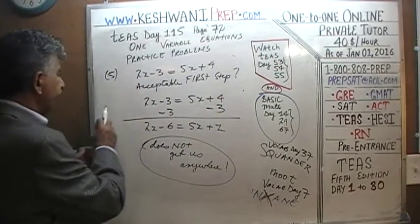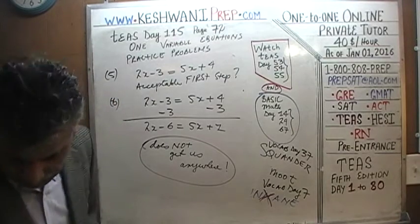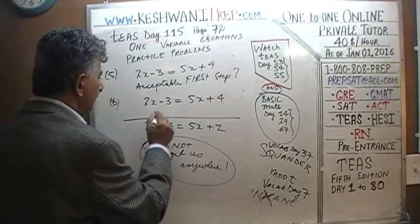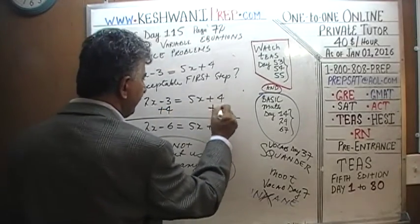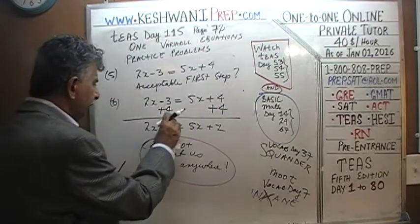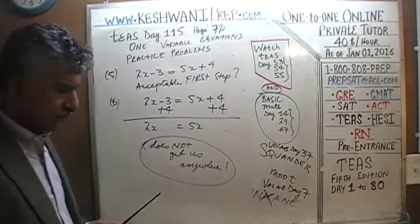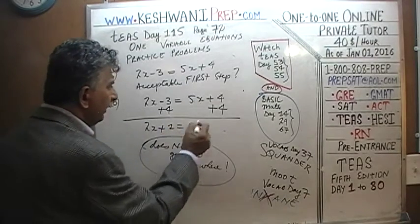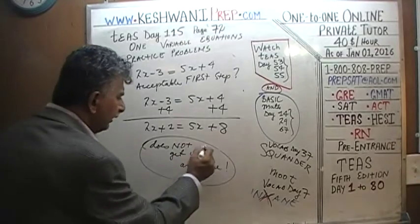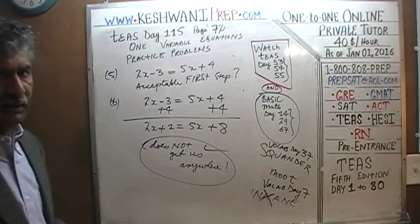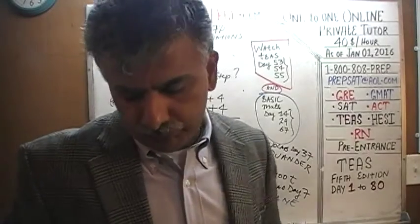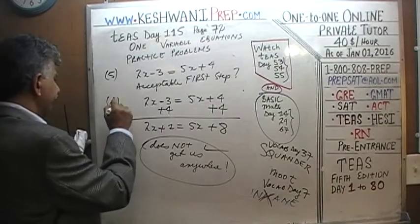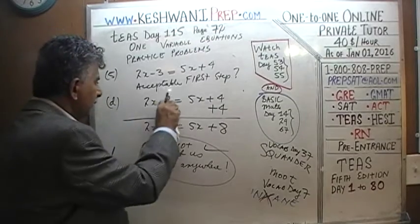Let's look at answer choice B: add 4 to both sides. If we add 4 to both sides, 2x comes down, negative 3 and positive 4 gives us positive 1, and positive 4 and positive 4 gives us positive 8. Again, it's a dead end — it doesn't get us anywhere and does not achieve anything at all.